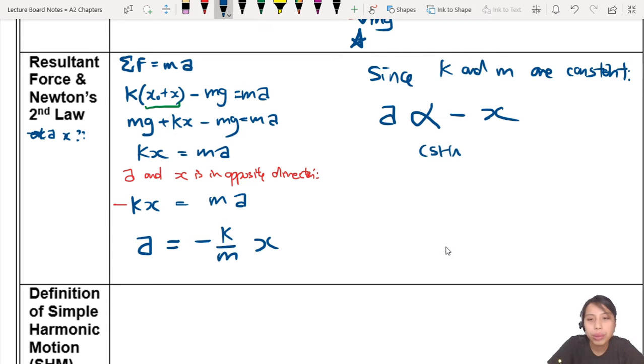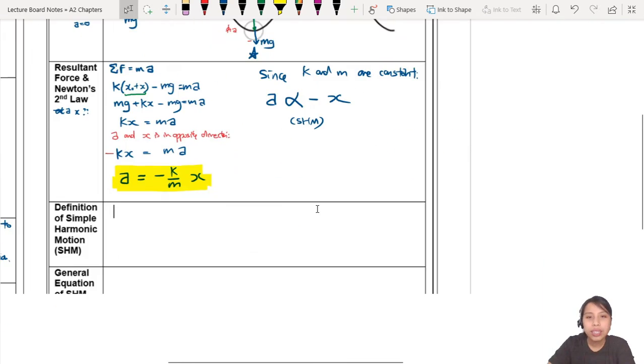And this is again our simple harmonic motion pattern. A proportional to X. Definition, ma. But for our spring in particular, this is our equation for an oscillating spring. The further you are away from equilibrium, the bigger you will accelerate to the equilibrium.